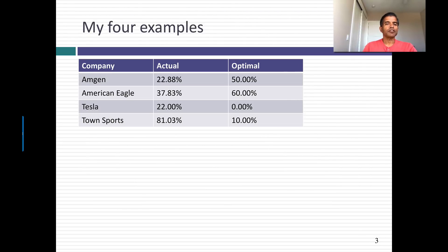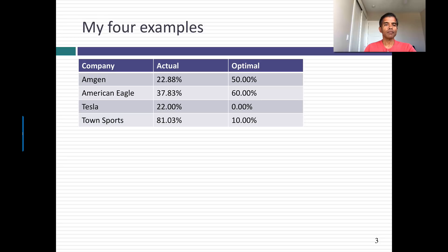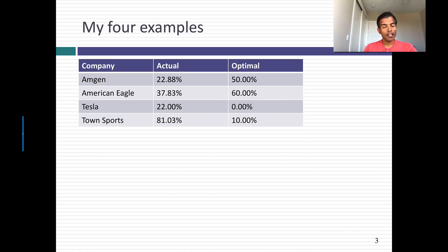Let's use four examples to illustrate what to do once you've found that your company is not at its optimal. The first is Amgen, a biotechnology company — closer to being a pharmaceutical company than a biotech in terms of life cycle, but a very profitable biotechnology company. Its actual debt ratio is about 23 percent and its optimal is 50 percent, using the cost of capital approach. American Eagle is a U.S. retailer that sells its own and other products through stores, with almost a thousand stores across the country. Its actual debt ratio is about 38 percent — that does include leases — and the optimal is 60 percent.